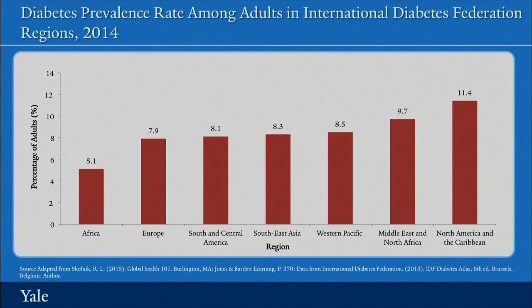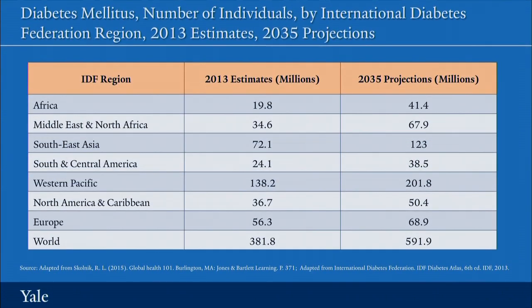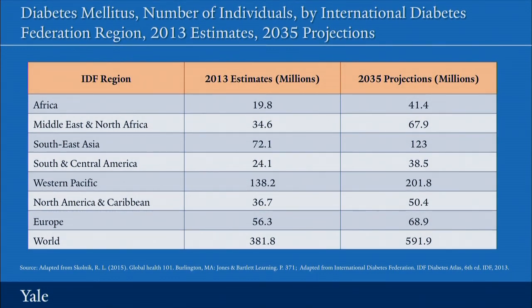Looking at this, I want to highlight the fact that these rates are growing. In fact, many people are referring to a global epidemic of diabetes. We can look at the projections that the International Diabetes Federation has made of what they think will happen to the number of individuals in different parts of the world who will be affected by diabetes as we look forward to 2035.